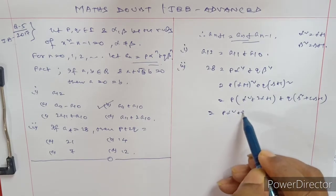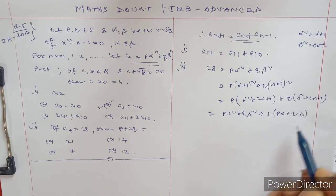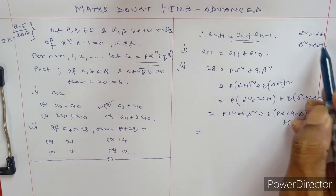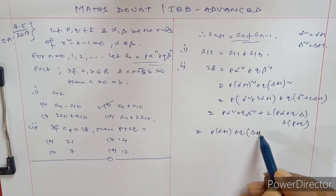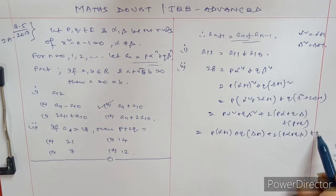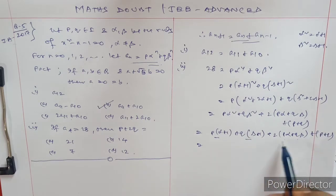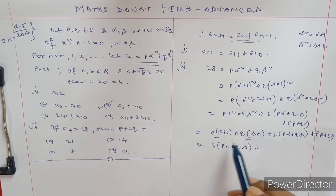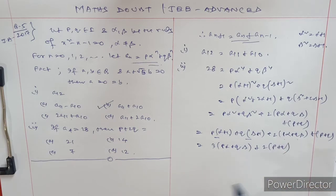This equals p·α² + q·β² + 2(p·α + q·β) + (p + q). Substituting α² = α+1 and β² = β+1: p(α+1) + q(β+1) + 2(pα + qβ) + (p+q). So we get 3(pα + qβ) + 2(p + q).